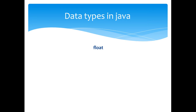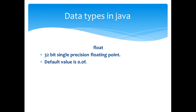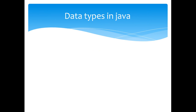The next type is the float type. It is a 32-bit single precision floating point value. The default value is 0.0f. Example: float x is equal to the value shown here.